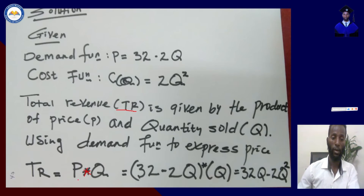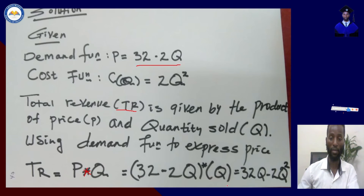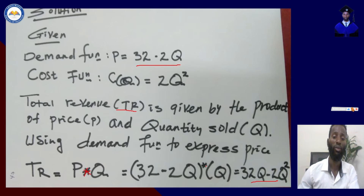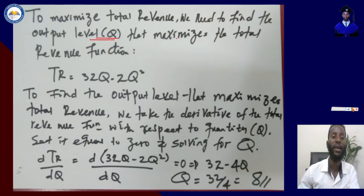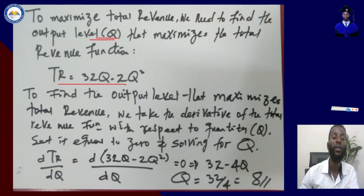Substituting the demand function, total revenue equals (32 minus 2q) times q. When we multiply this out we obtain TR equals 32q minus 2q squared. To maximize the total revenue, we need to find the output level q that maximizes the total revenue function. To find this, we take the derivative of the total revenue function with respect to q and set it equal to zero.